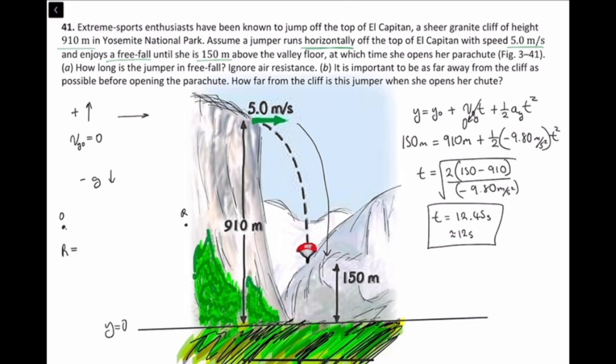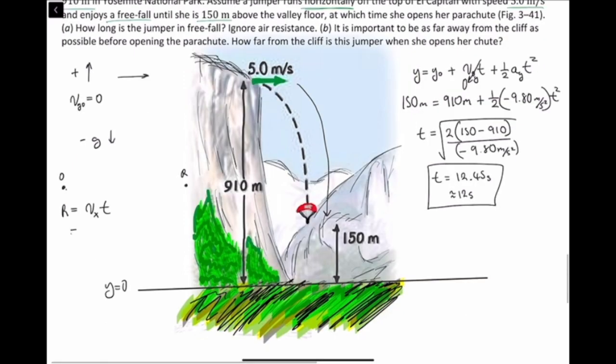So r minus zero is r. To get the distance, we use the initial velocity, the x component of that velocity, times the time she spent in the air. So her range is going to equal...